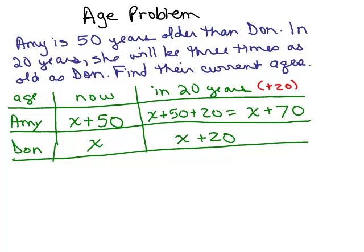So what we are looking at is what they told us, some relation about their age right now, which is that she's 50 years older, and we looked at the other time frame it's discussing, which is in 20 years. So that helped me fill out the information in this chart. This is not the equation.